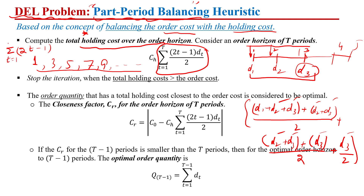This forms an arithmetic series that can be written as (2t − 1), summed from t = 1 to capital T, where T is the order horizon — whether it is two, three, or five time periods. To calculate the average inventory for a given time period t in the order horizon, we use the expression (2t − 1) * dt / 2, where dt is the demand in that time period. Multiplying the sum of these average inventories by the holding cost per unit per time period gives us the total holding cost.